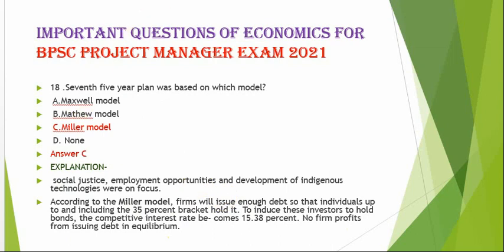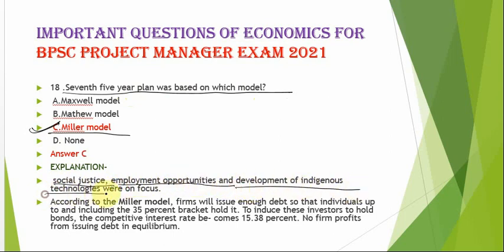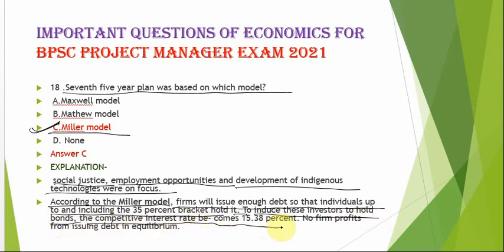The next question is: the Seventh Five Year Plan was based on which model? The correct option is option C — the Miller model. Social justice, employment opportunities, and development of indigenous technologies were on focus. According to the Miller model, firms will issue enough debt so that individuals up to and including the 35% tax bracket hold it; the competitive interest rate becomes 15.38% and no firm profits from issuing debt in equilibrium.